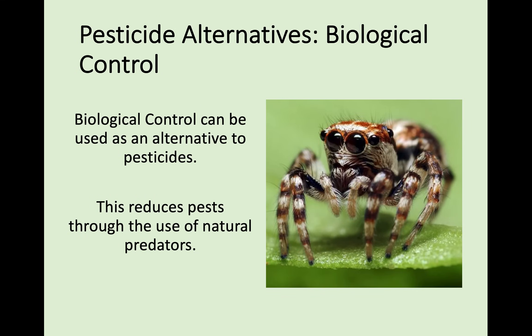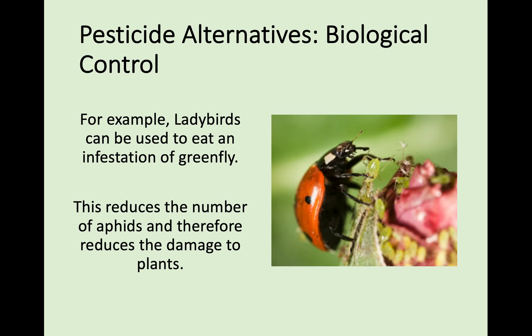Another alternative is biological control — a natural alternative that uses the natural predators of the pest to decrease pest numbers. For example, if you had greenfly eating your crops, you could release ladybirds into the area. Ladybirds are natural predators of greenfly, so they won't attack your plants but will eat the pests that are causing problems, reducing damage and increasing your crop yield.